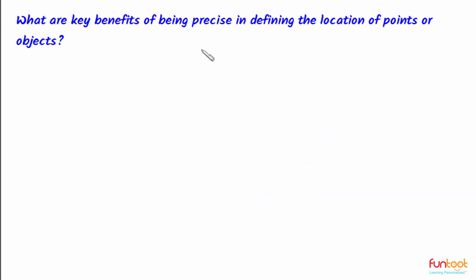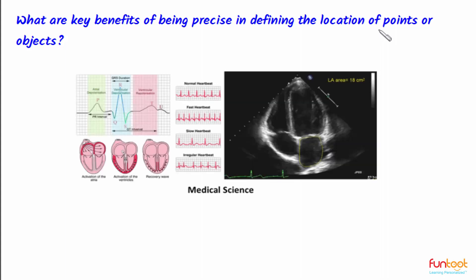Now, let's see what are the key benefits of being precise in defining the location of points or objects. First, let's see the benefits in Medical Science. An ECG that is Electrocardiograph helps in measuring the variations in heart and an echocardiogram helps in finding the blockages or if there is a hole in heart, it helps in finding the size of the hole.